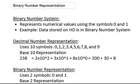In this tutorial we're going to be examining binary number representation. So let's start off with the basics. What is binary? The term binary implies two. So if we're talking about a binary number system, that means we're talking about a number system that represents numerical values using two different symbols — those symbols being 0 and 1.